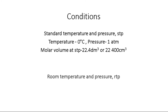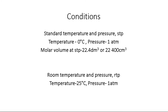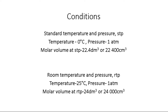The second condition at which molar volume can be stated is room temperature and pressure, or RTP. At room temperature and pressure, the temperature is 25°C and 1 atmosphere. At this condition, one mole of any gas occupies 24 dm³ or 24,000 cm³. So the molar volume at RTP is 24 dm³ or 24,000 cm³. Now let's look at actually calculating moles and volumes, now that we know the molar volumes at specific conditions.